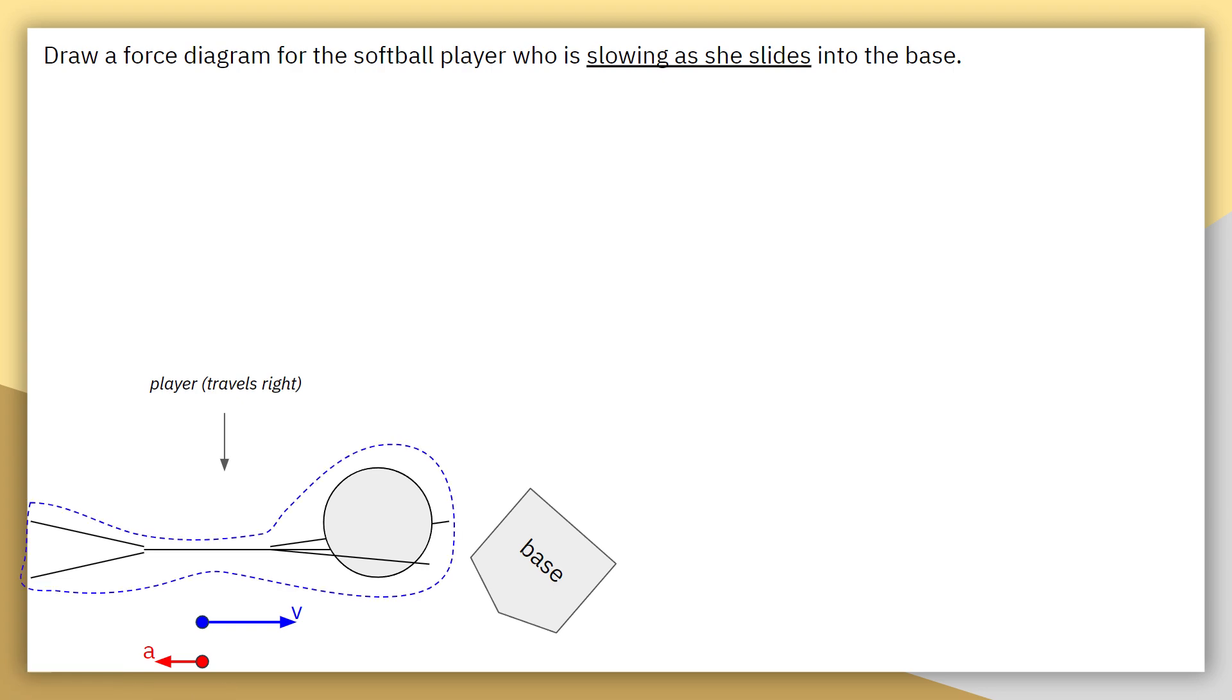So I'm now identifying my system boundary, which is just going to be the softball player. I shrink that system down to a single dot. The first force that I'm going to be putting on there after I've identified the coordinate planes is going to be the force of gravity. It's the type of force gravity acting on the player by the earth.